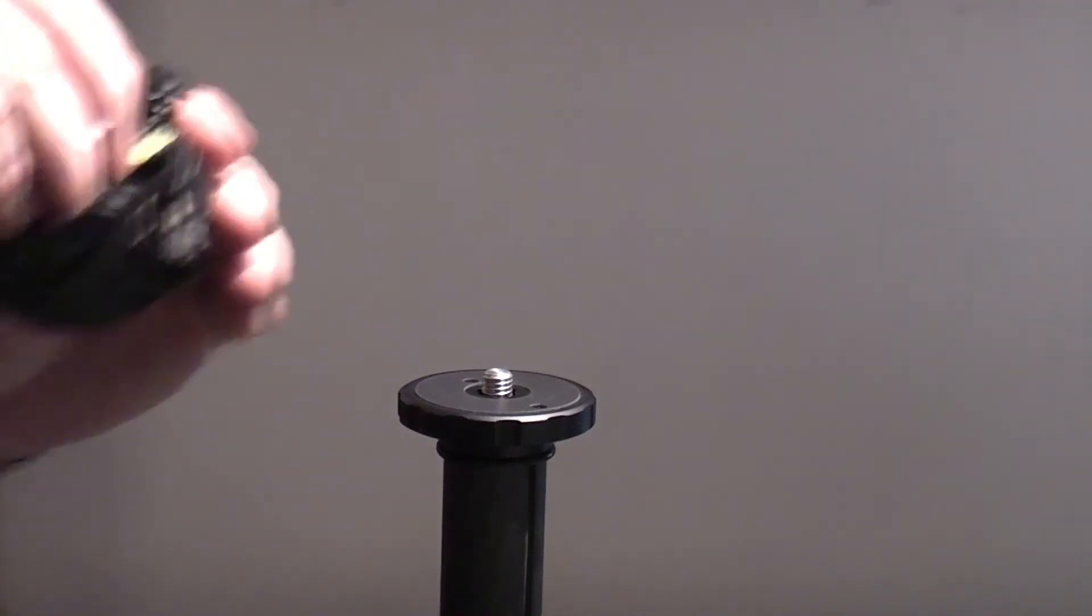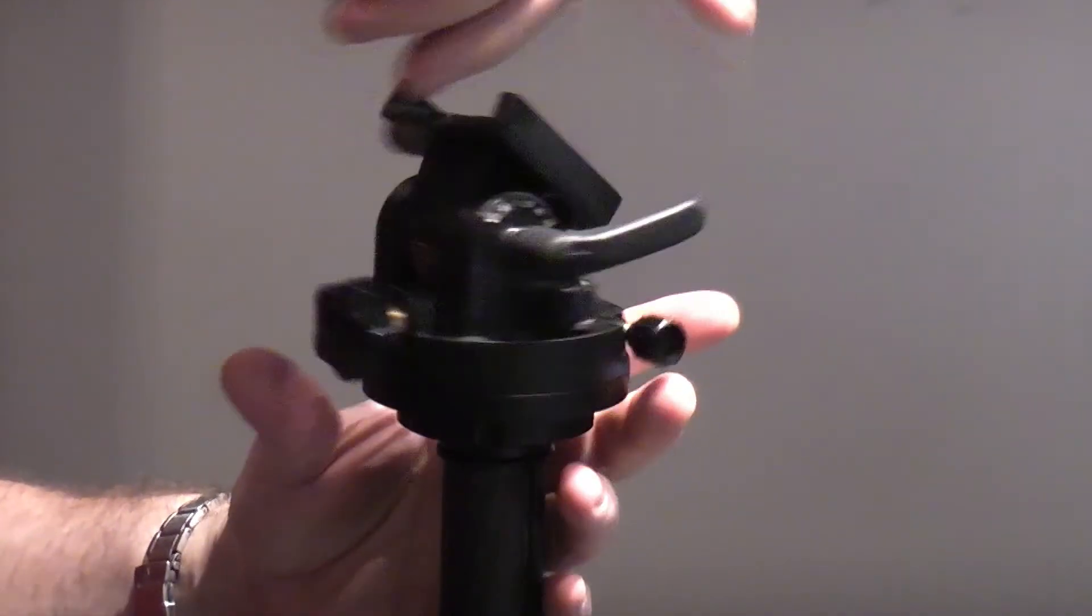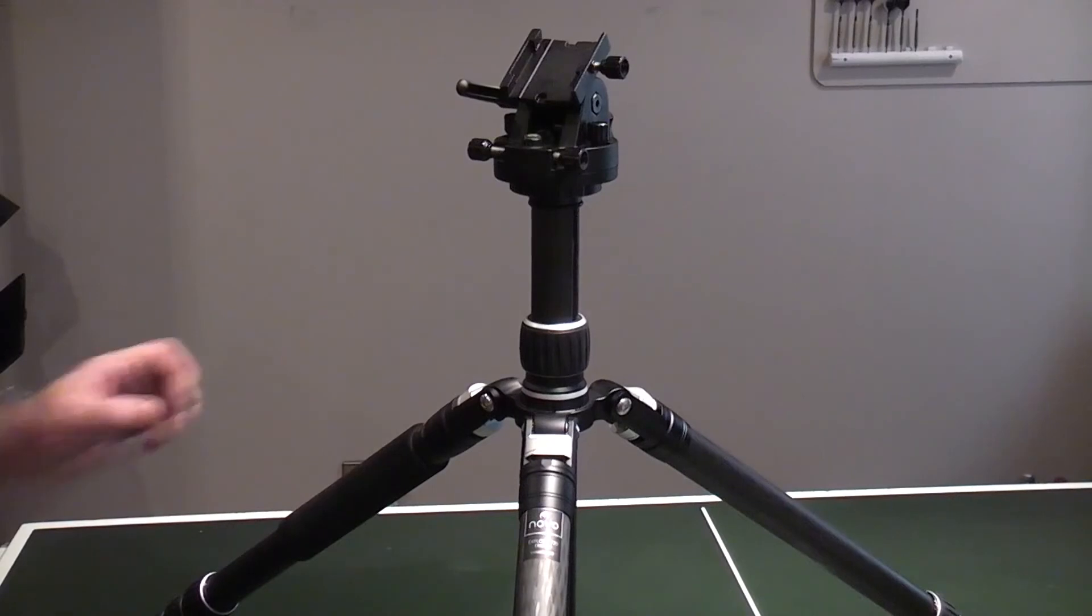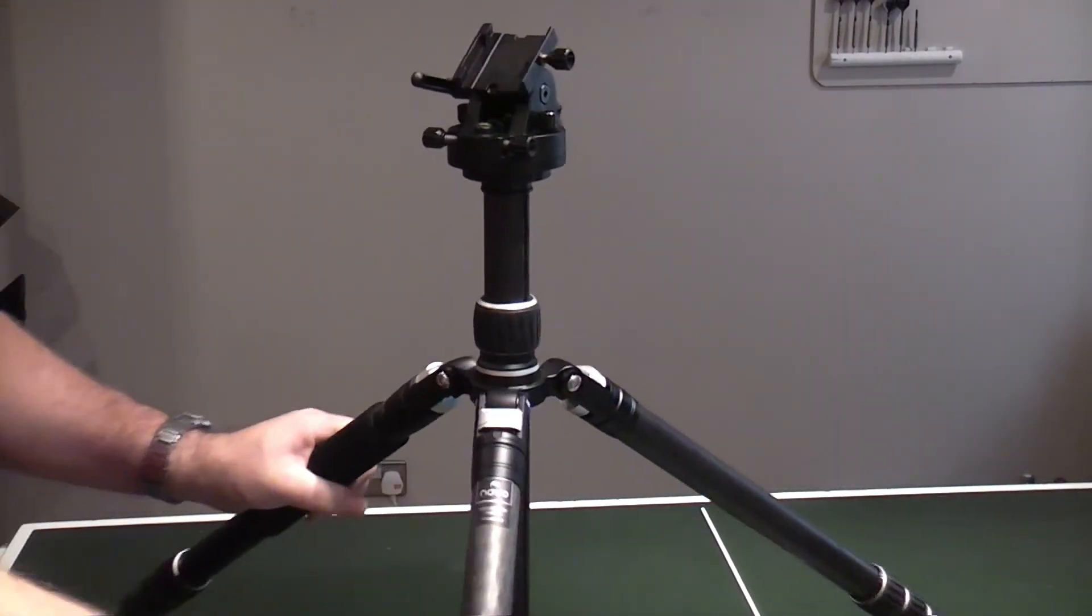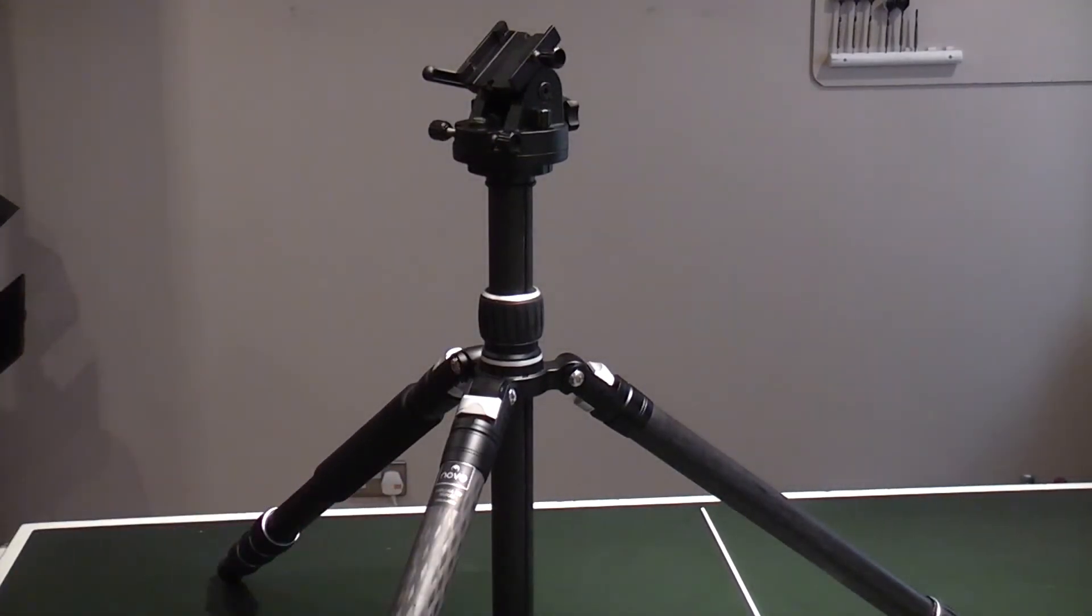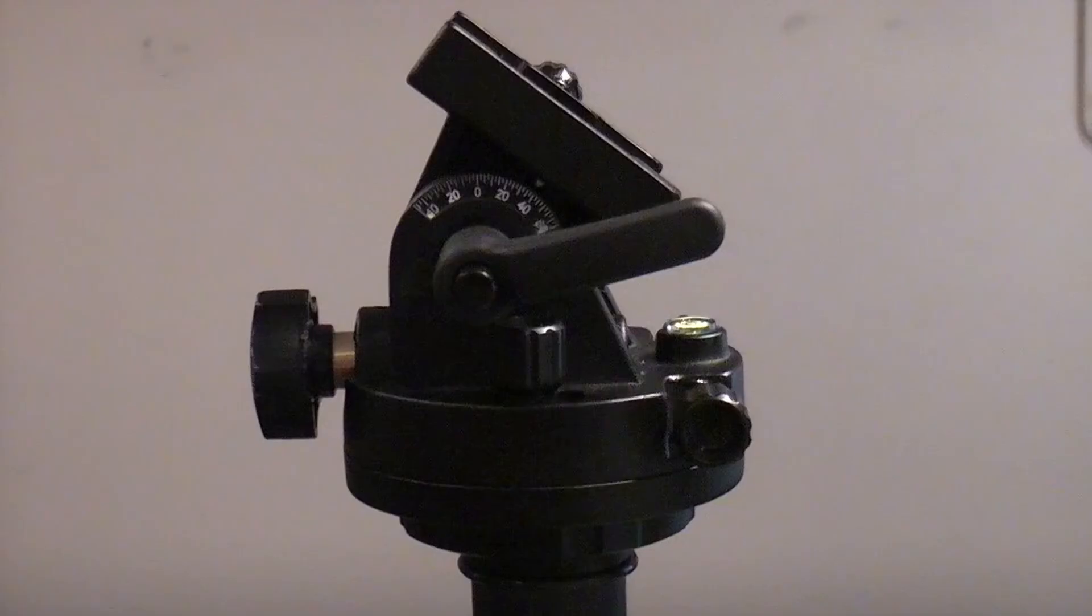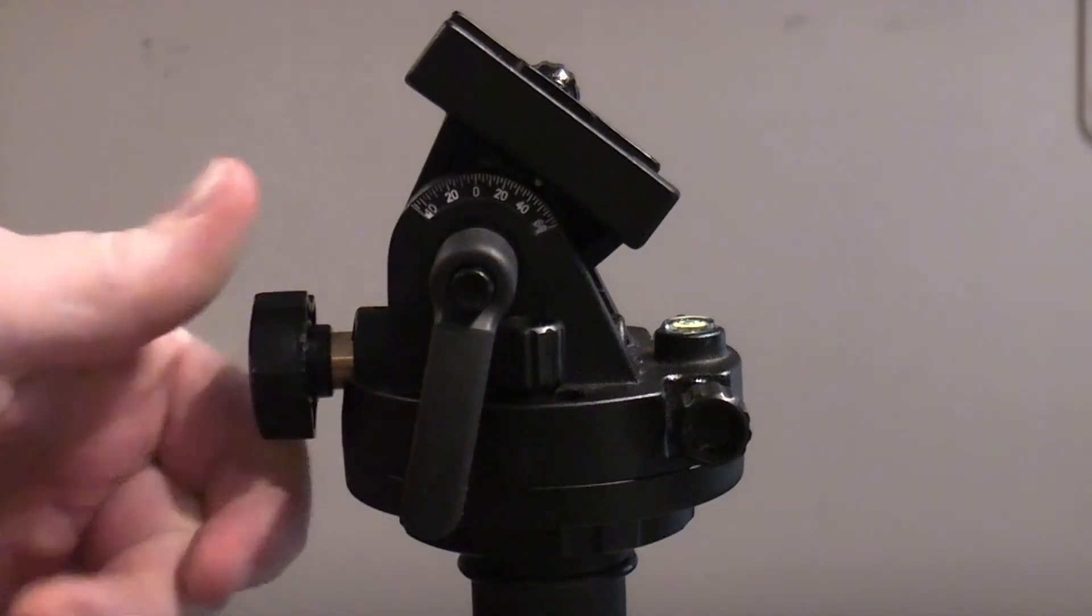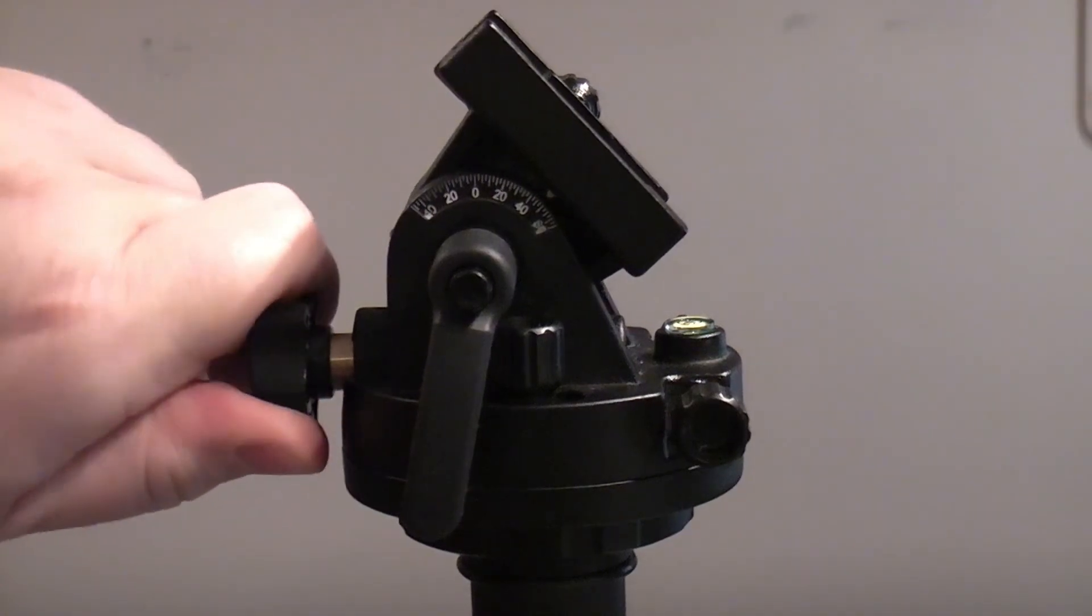So to set it up, we set up the tripod and attach the altaz bracket to the top, making sure it's nice and tight, and then rotate the tripod base so that the slope of the mount on the bracket at the top is pointing roughly due north. Then we just adjust, fine adjust the legs of the tripod so that the spirit level bubble shows that we're level, and then set up the altitude angle to match our latitude, in my case 51 degrees, and then lock that off.